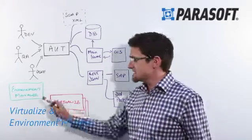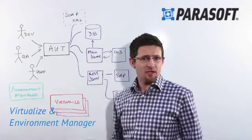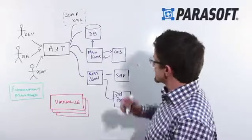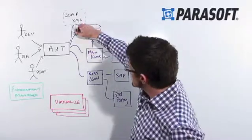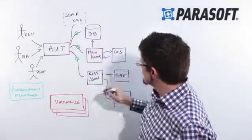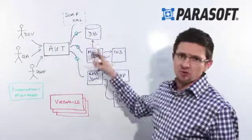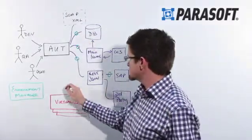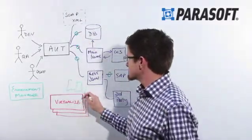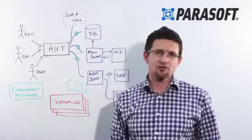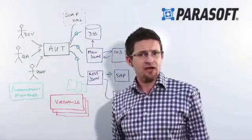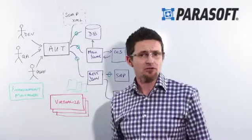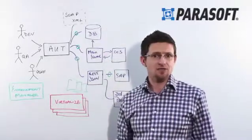This is where Virtualize and Environment Manager can really help. What Virtualize allows me to do is actually intercept different communications with existing systems at multiple points within that hierarchy and capture, in essence, a repository of traffic. That repository of traffic can then be used to build a simulation or a model of what those backend systems are.